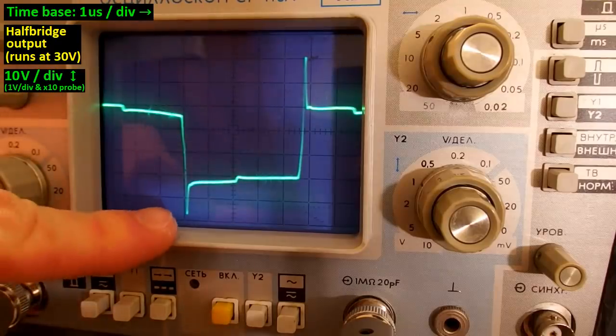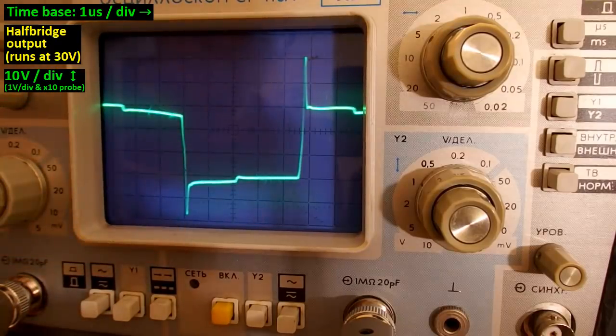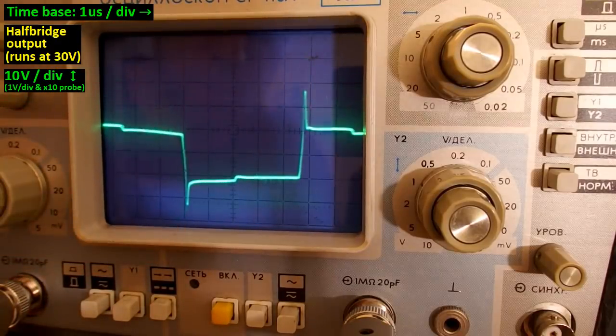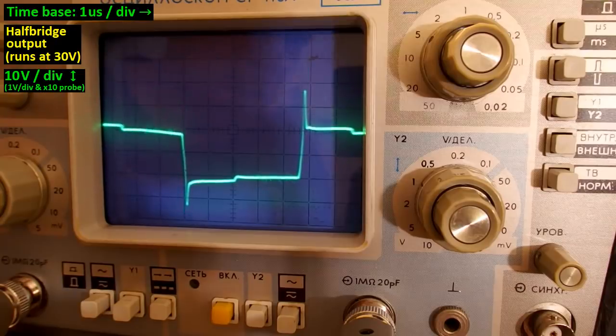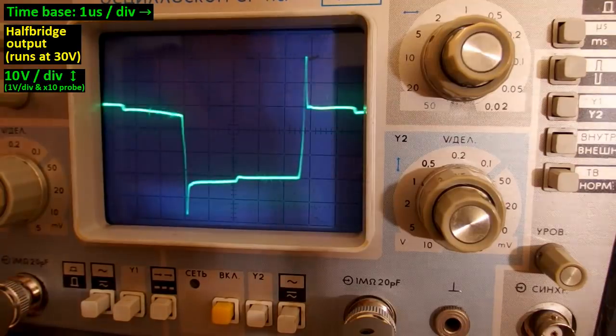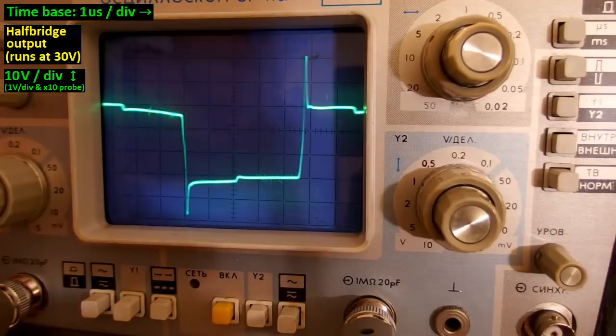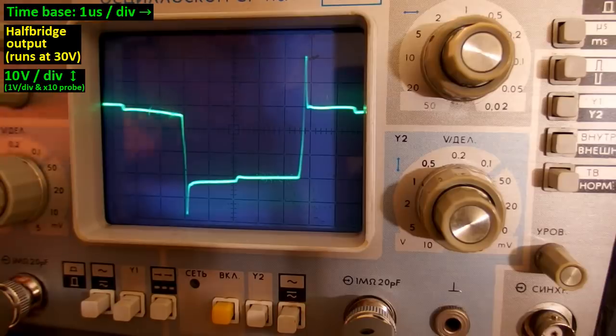But the overshoots are quite scary. When I change the input voltage, it seems to all change proportionally. But of course, the overshoots also depend on where do I connect the oscilloscope. I connect it to the same wire or trace, just couple centimeters away. And those overshoots look completely different.